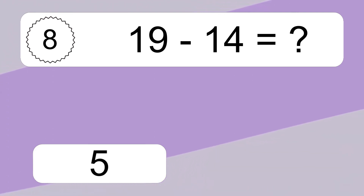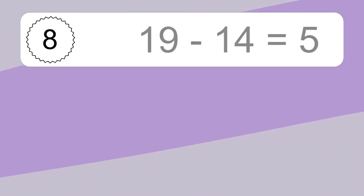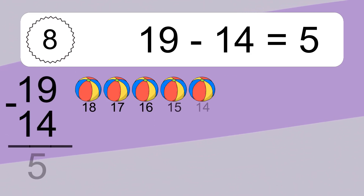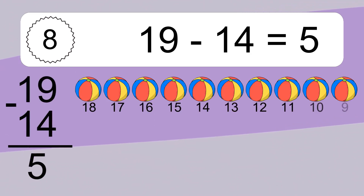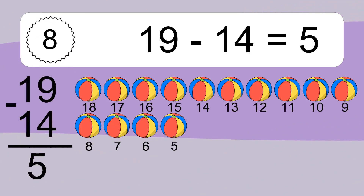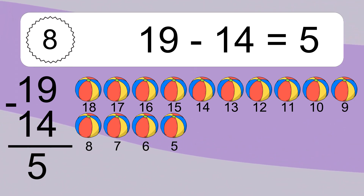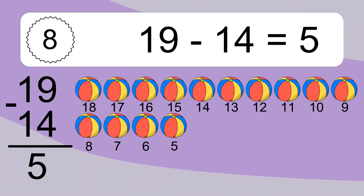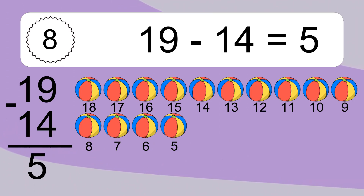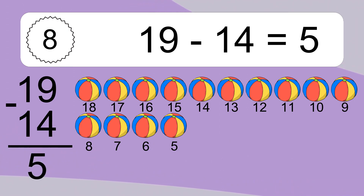19 minus 14 equals 5. Let's count it: 18, 17, 16, 15, 14, 13, 12, 11, 10, 9, 8, 7, 6, 5.